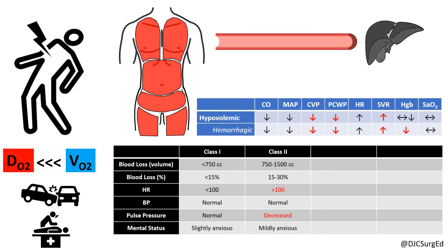Class 3 shock accounts for 1500 to 2000 cc's of blood loss, or 30 to 40 percent of blood volume, and is associated with the presence of hypotension. Class 4 shock accounts for greater than 2 liters of blood loss, or greater than 40 percent of blood volume, and hemodynamic instability.